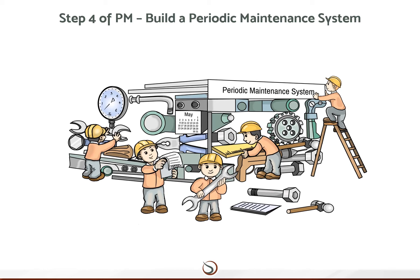The fourth step of PM is building a periodic maintenance system. In periodic or time-based maintenance, standby units, spare parts, inspection equipment, lubricants, and technical information such as drawings may be required to carry out the scheduled work. Maintenance work proceeds smoothly only if these resources are properly prepared in advance, so we need to have a periodic maintenance system in place.